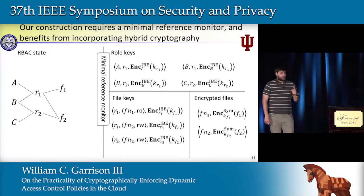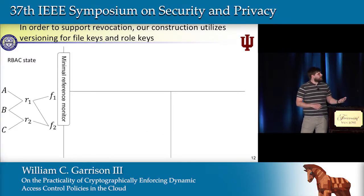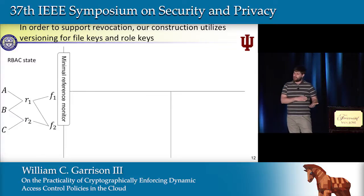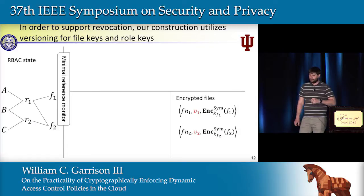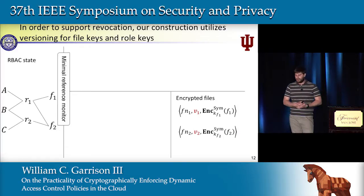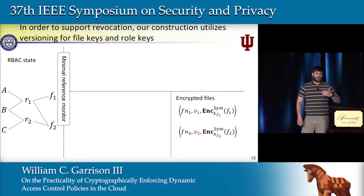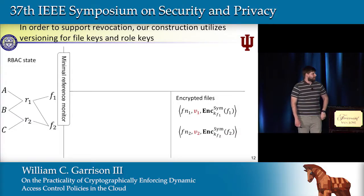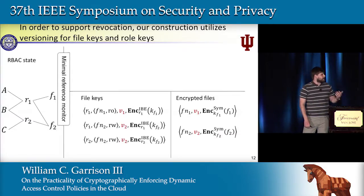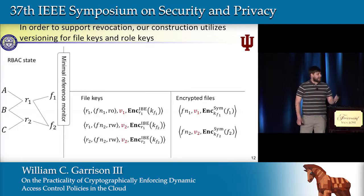So now we can do writes—we can enforce that only certain users can write to a file—but we still don't have a simple way to support revocation in the scenario where users could be caching keys. What we're going to do to handle this is use key versioning. When we're encrypting our files now, we'll specify which version of the key for this file was used to encrypt it. Similarly, in our file key bundles, we'll also specify what version of the key is contained in the bundle.